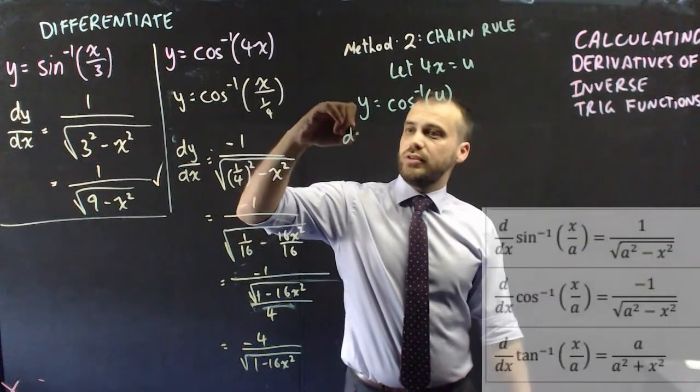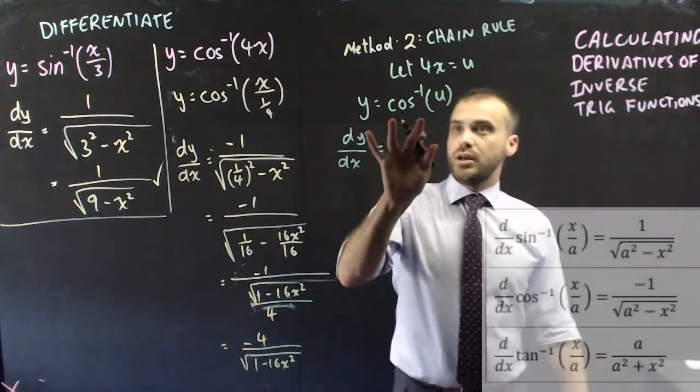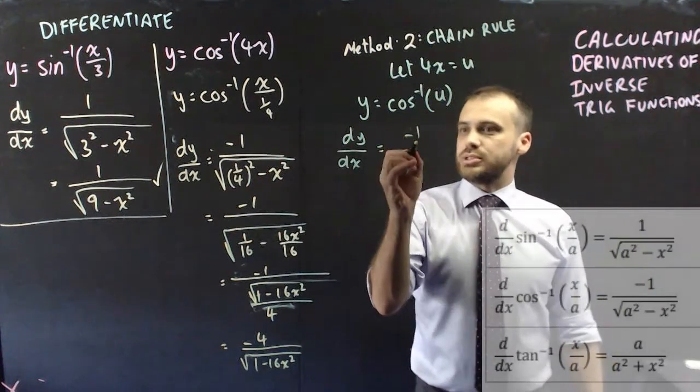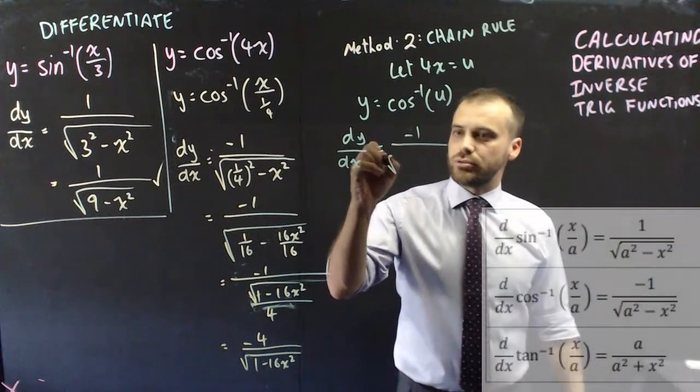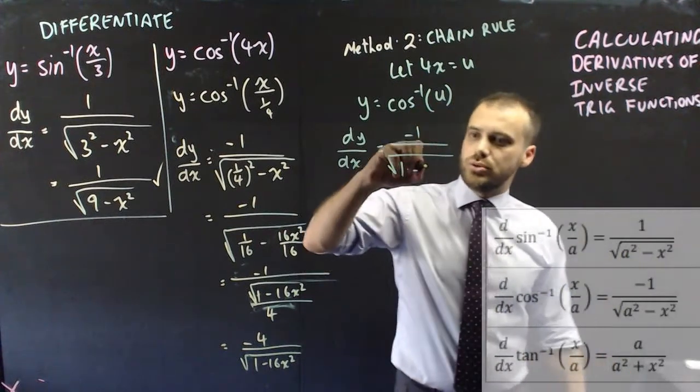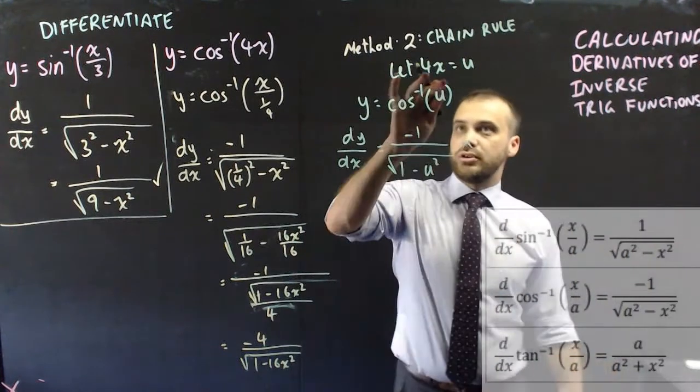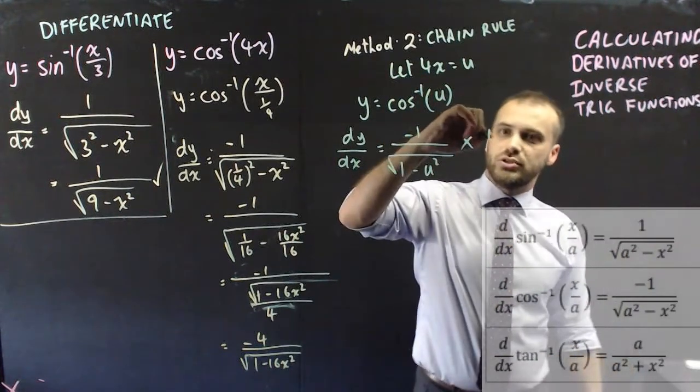And that's what we put into our formula. So now we know that the derivative of y with respect to x will be equal to the derivative of that, which we know is negative 1 over root 1 squared, which is 1, minus u squared, and then multiply that by the derivative of 4x, which is 4.